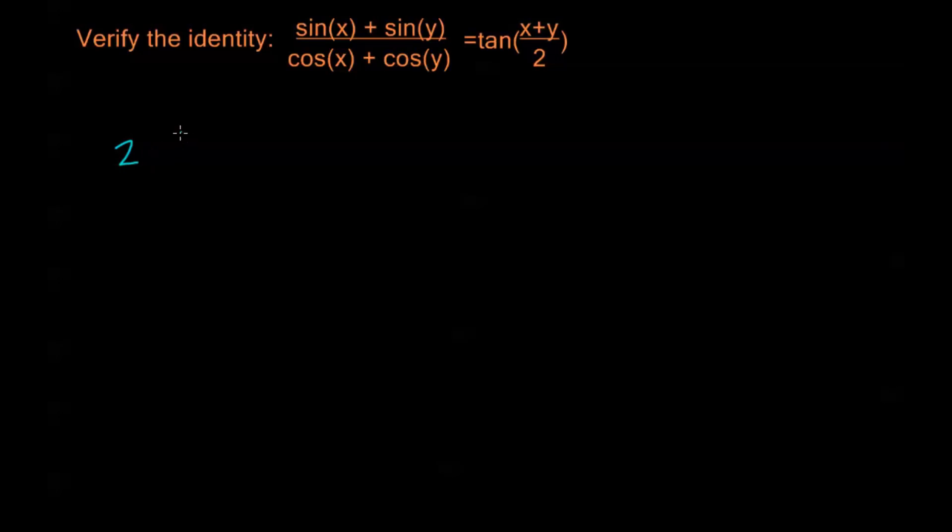that's going to be 2 sine of x plus y over 2 times cosine of x minus y over 2. And now we need to use the sum-to-product formula for the addition of cosines, and that's 2 cosine of x plus y over 2 times cosine of x minus y over 2.